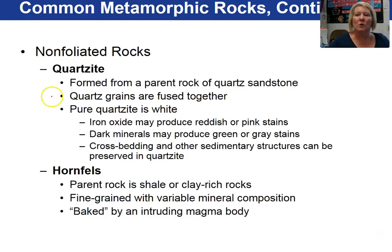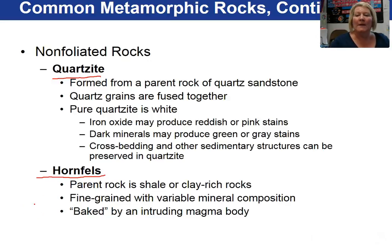The next non-foliated rock is quartzite. Quartzite forms from the metamorphism of a quartz sandstone. The quartz grains in a quartzite are no longer individual — they are fused together. Hornfels is a non-foliated rock that is baked by intruding magma. It is fine-grained with a dull luster, and the parent rocks are usually shale or mud-rich rocks.